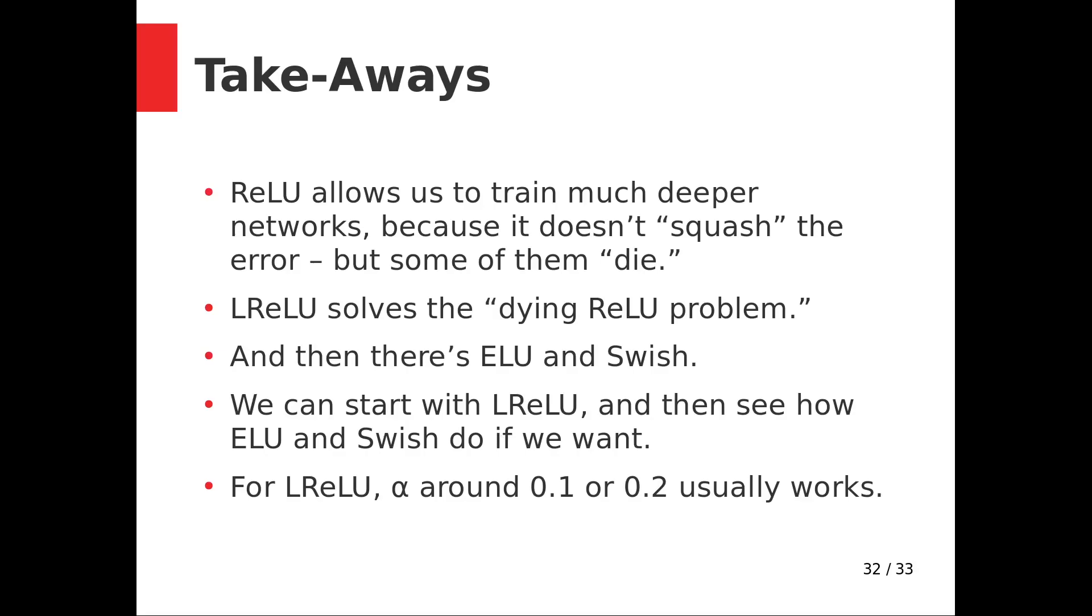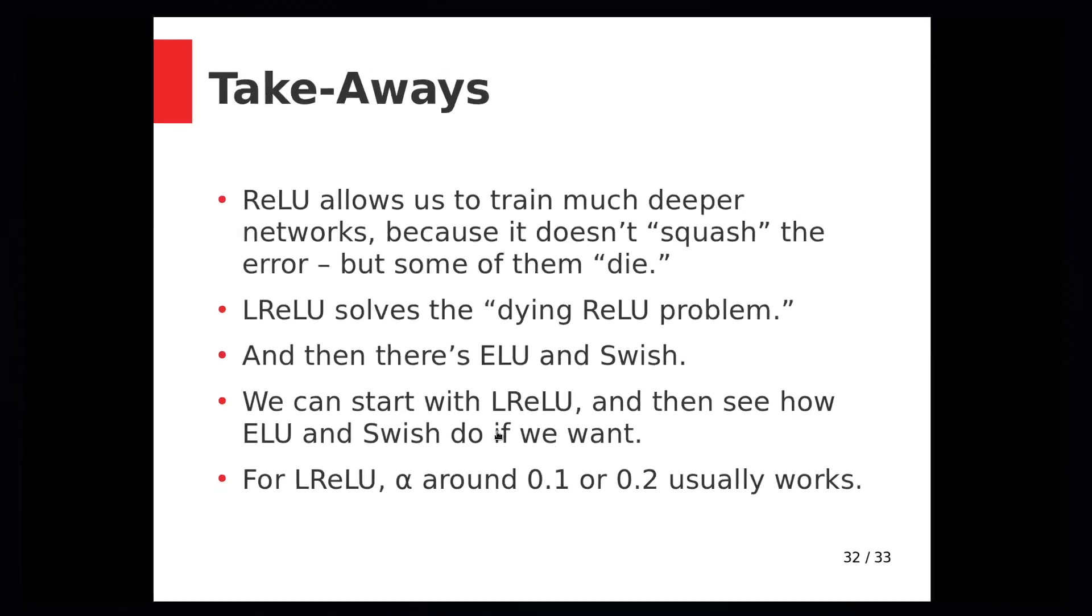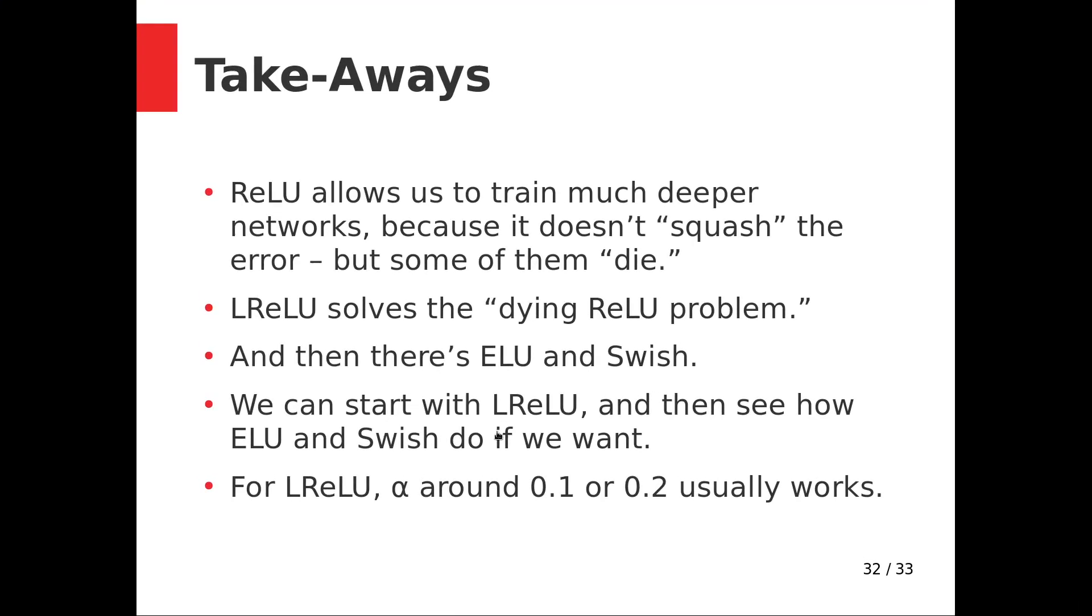So the takeaways of all of this: ReLU allows us to train much deeper networks because it doesn't squash the error, but some of them die. Leaky ReLU or LReLU solves the dying ReLU problem. After that, people discovered the exponential linear unit, ELU, and Swish. So what, yeah, reasonable things that we can do: we can start with leaky ReLU and then see how ELU and Swish perform if we want. You could also just cut to the chase and start with Swish, since at least Google claims that it outperforms all of the variants of ReLU. If you want to do ReLU, 0.1 and 0.2 are usually good values for the leak factor alpha.